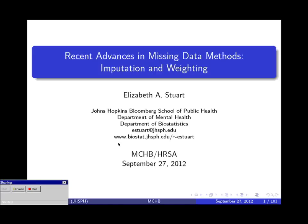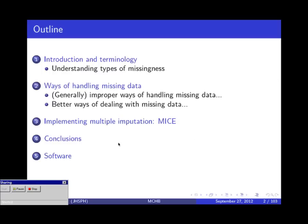To dive in and show you the outline for today: first I'm going to spend some time on the background of missing data and some essential tools and framework. Then we'll talk about ways of handling missing data — first the wrong ways and why those are not ideal, and then better ways, with a focus on multiple imputation and a particular type called MICE, which is especially nice because it's very flexible and can work with big data sets.